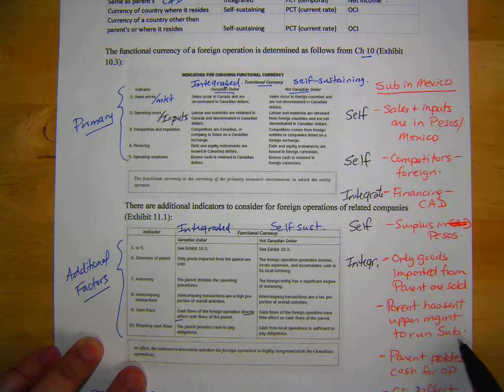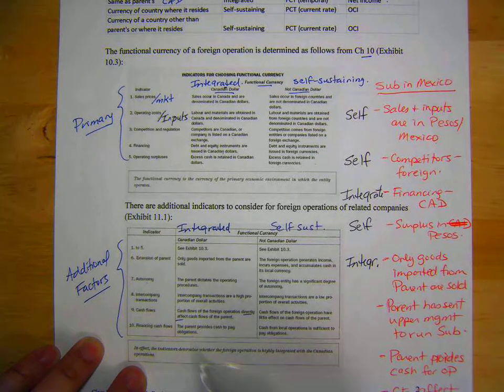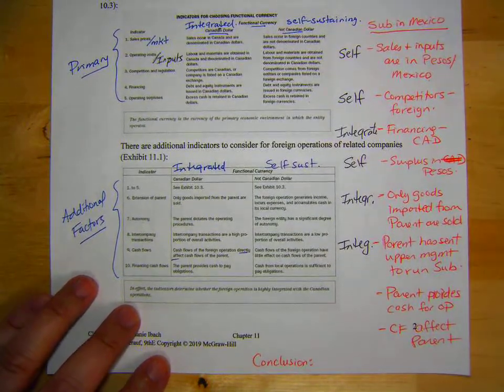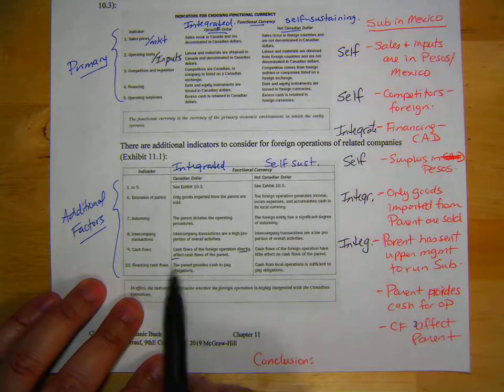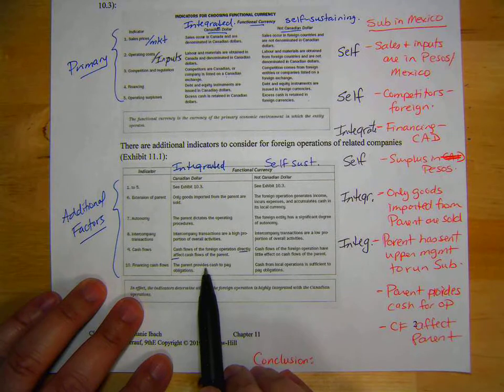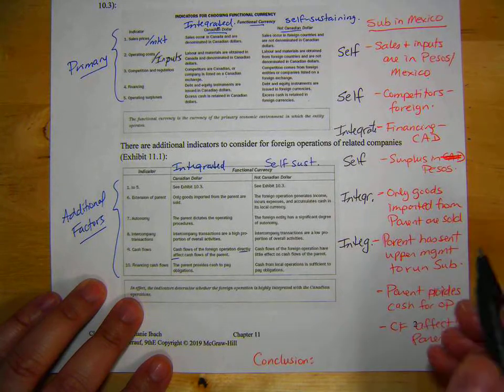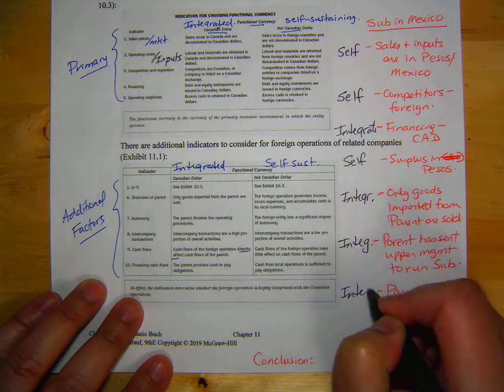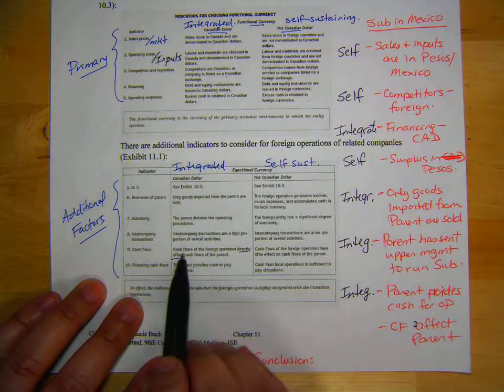Parent has sent upper management to run sub. Well, how much autonomy is that sub going to have? Not much. So it's going to be integrated. Parent provides cash for operations. So that's part of the financing cash flows here. So it's kind of related to financing and Canadian dollars. So that's going to be, they provide cash for operations. So that's going to be integrated. And the cash flows affect the parent. So cash flows directly affect.